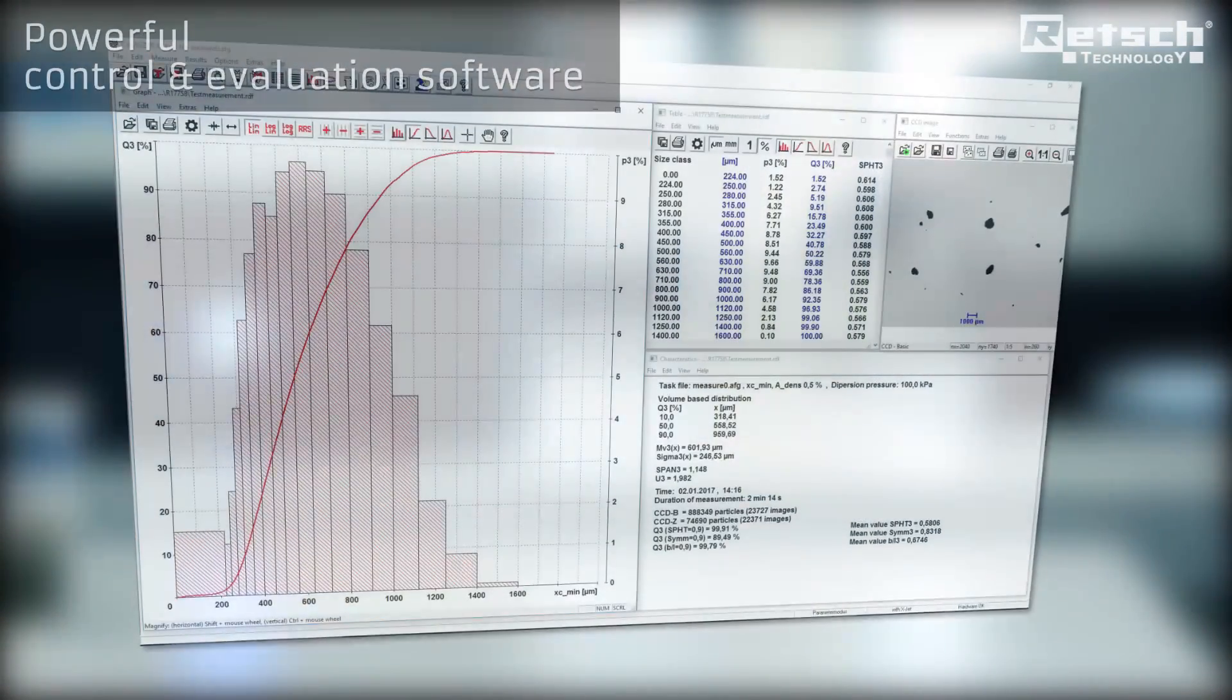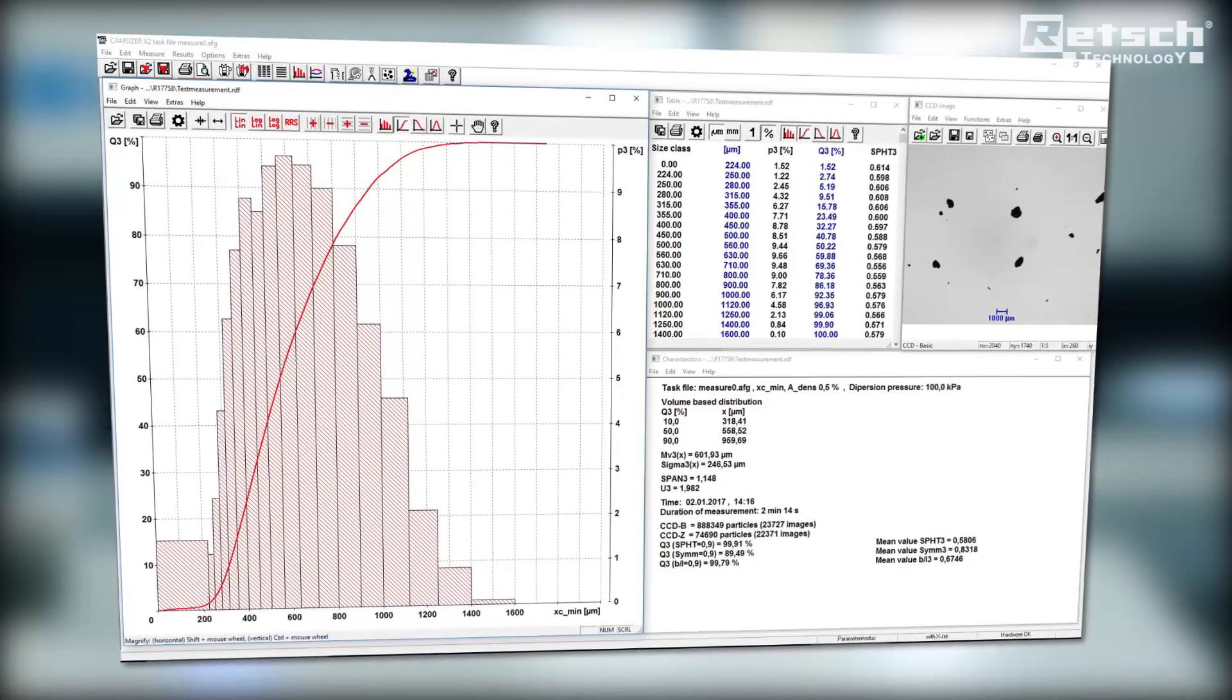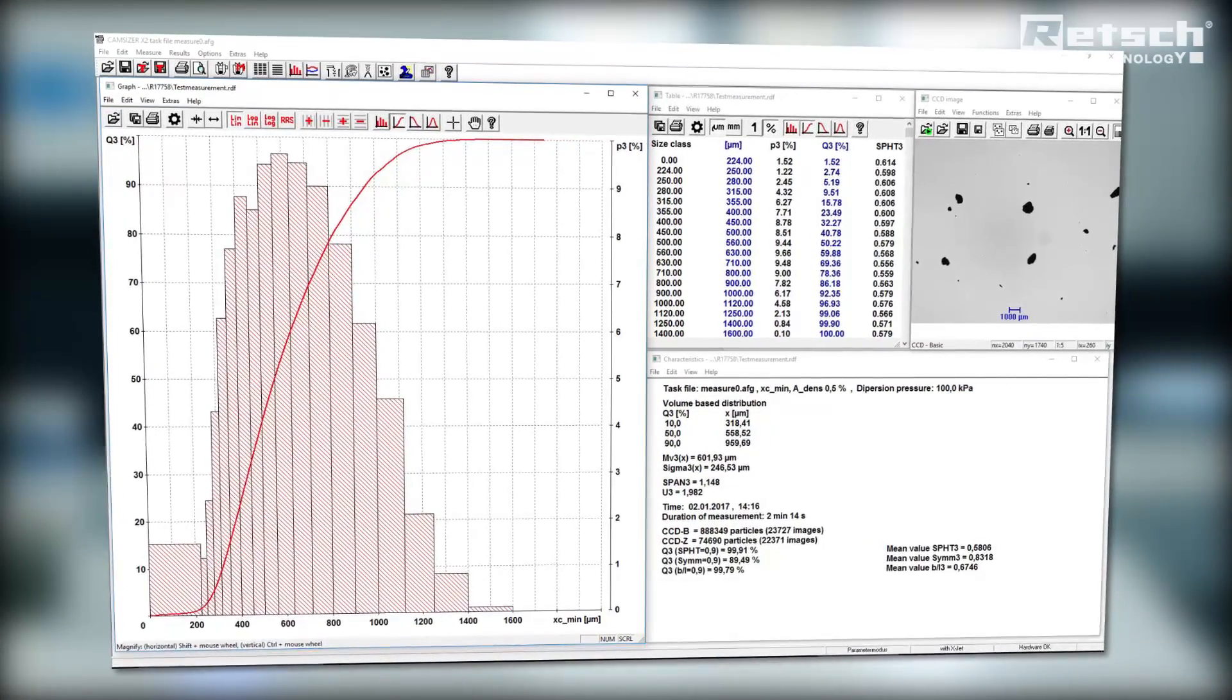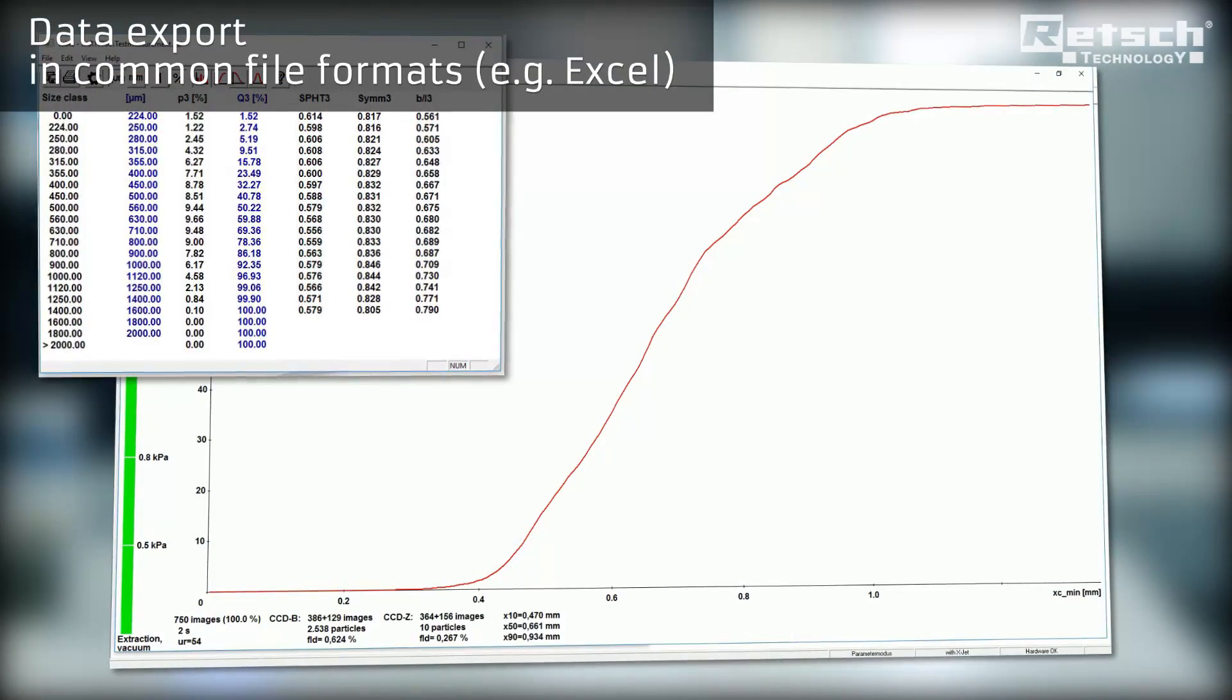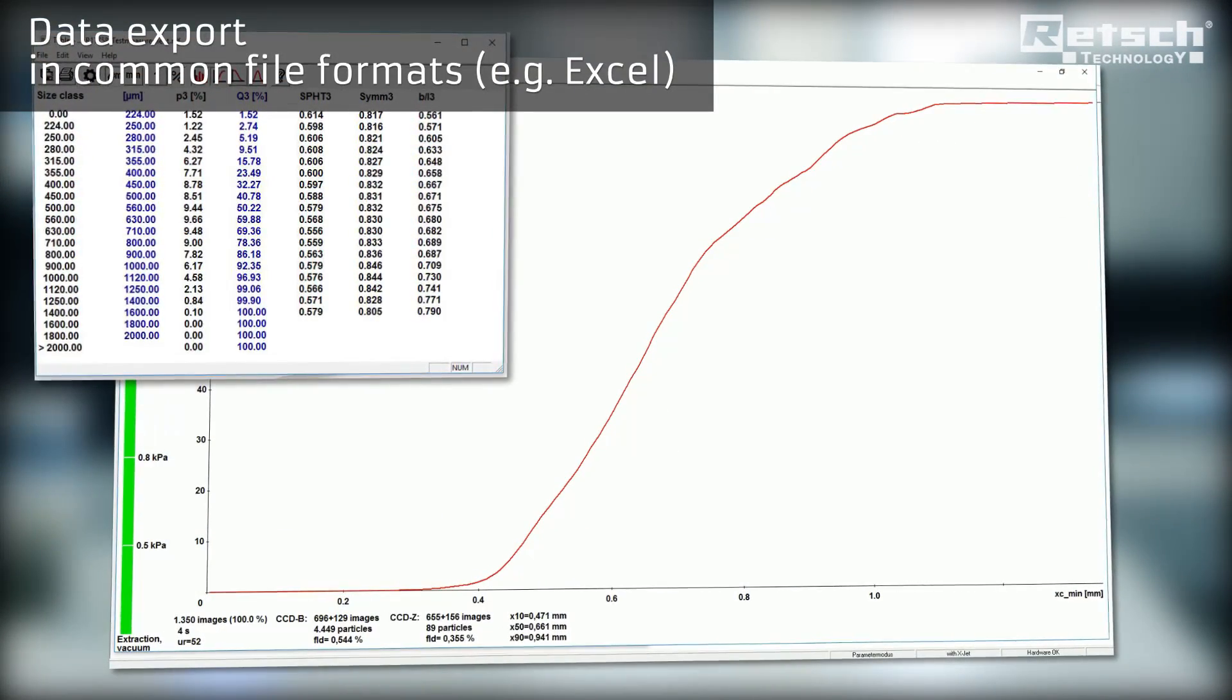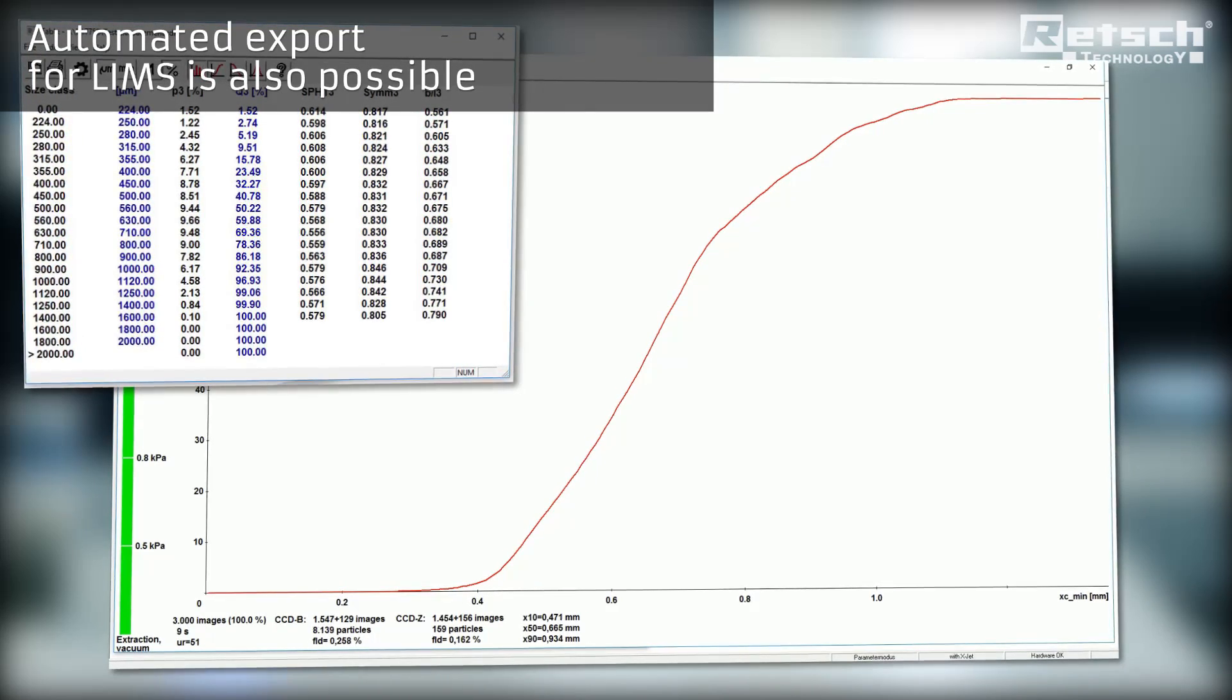RECH Technology supplies the CamSizer X2 complete with an elaborate and powerful control and evaluation software. Measurement data are displayed in tables or charts and can be exported in common file formats like Microsoft Excel. An automated data export for laboratory information management systems is possible.